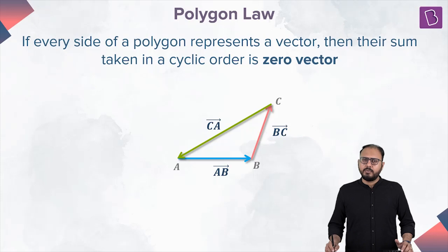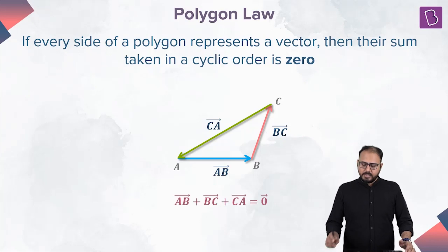Cyclic order. What does that mean? Cyclic order A to B, B to C, C to A. In other words, what you are saying is that AB plus BC plus CA is equal to zero.